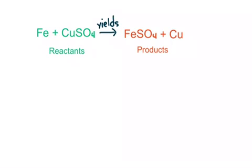The arrow is interchangeable with the word yields. So that a chemical reaction, such as this one, is read as iron added to copper sulfate yields, or produces, iron sulfate and copper.